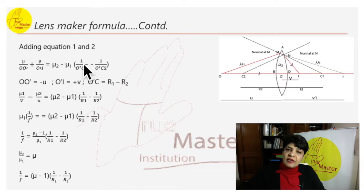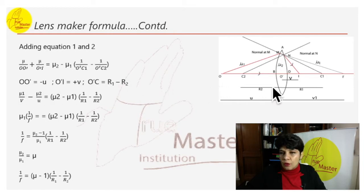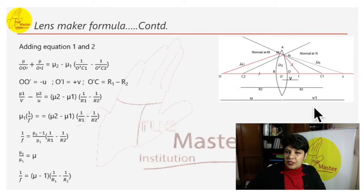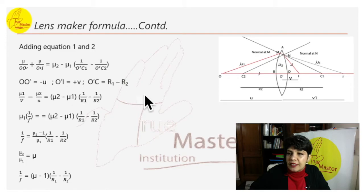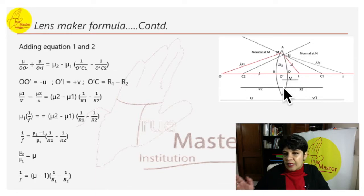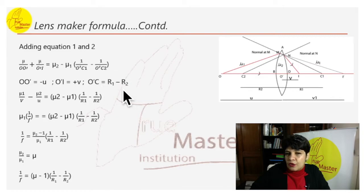After adding: mu_1/O'O + mu_1/O'I = (mu_2 − mu_1) · (1/O'C1 − 1/O'C2). Substituting: O'O = −u (negative, on left side of number line), O'I = +v (positive, on right side), O'C1 = R1, O'C2 = R2. This gives us the combined formula in terms of v, u, R1, and R2.